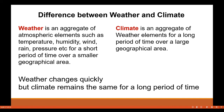Let us understand the difference between weather and climate, which are integral components of both climatology and geography. Weather is an aggregate of atmospheric elements such as temperature, humidity, wind, rain, and pressure, for a short period of time over a smaller geographical area — normally about 24 hours. On the other hand, climate is an aggregate of weather elements for a long period of time over a large geographical area.